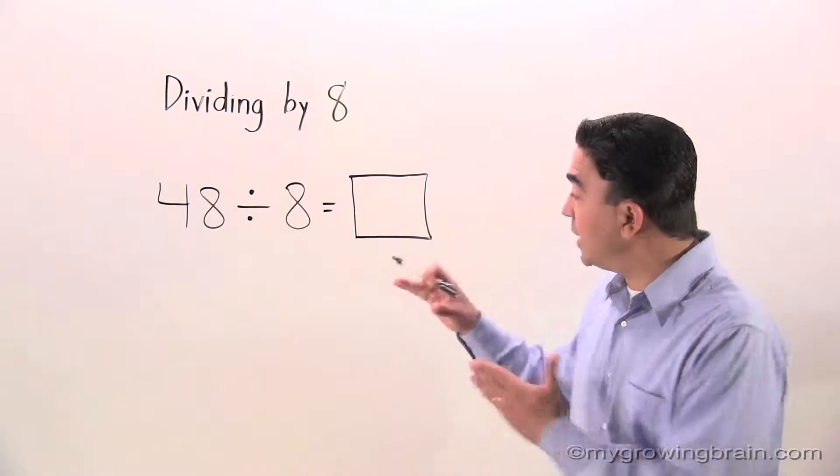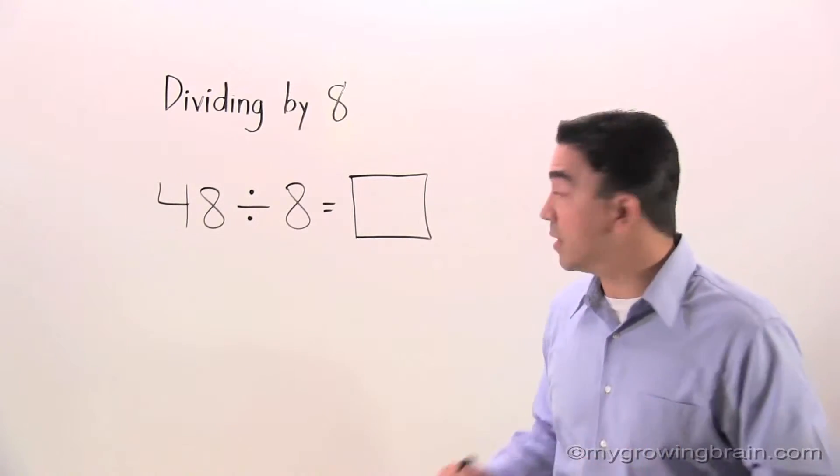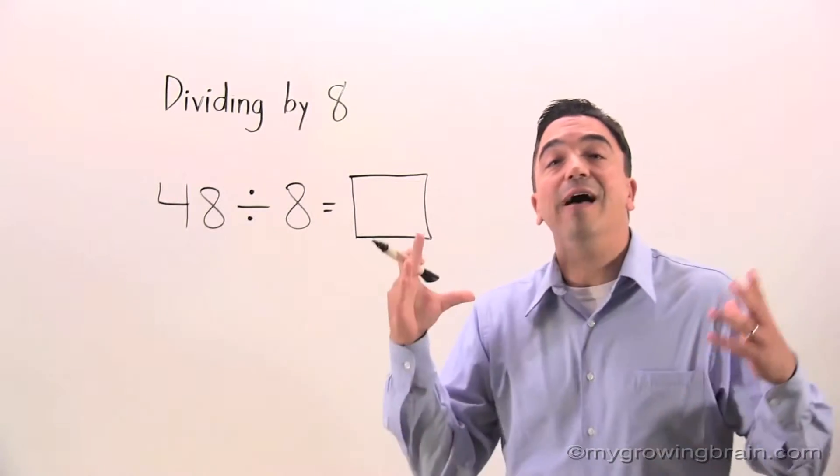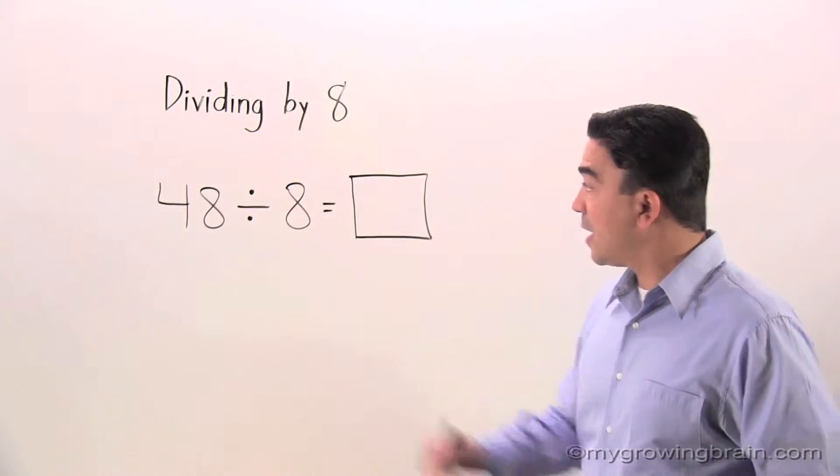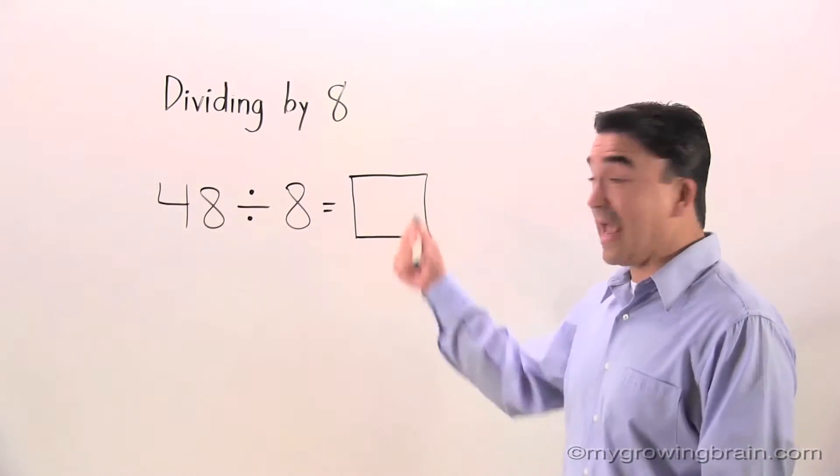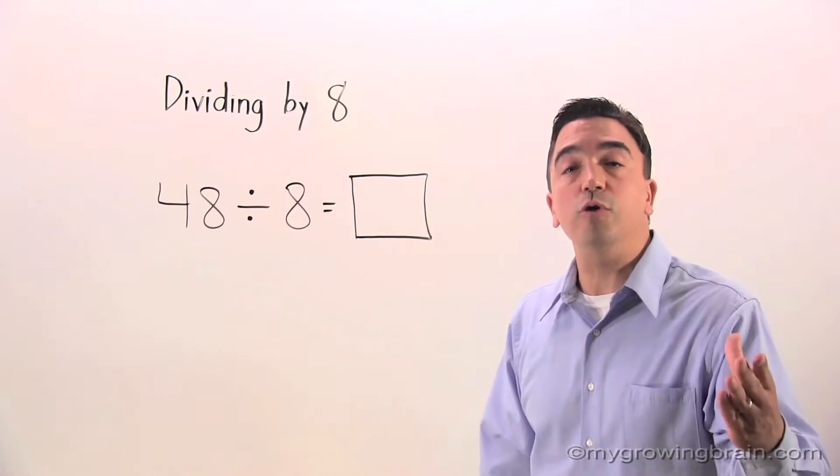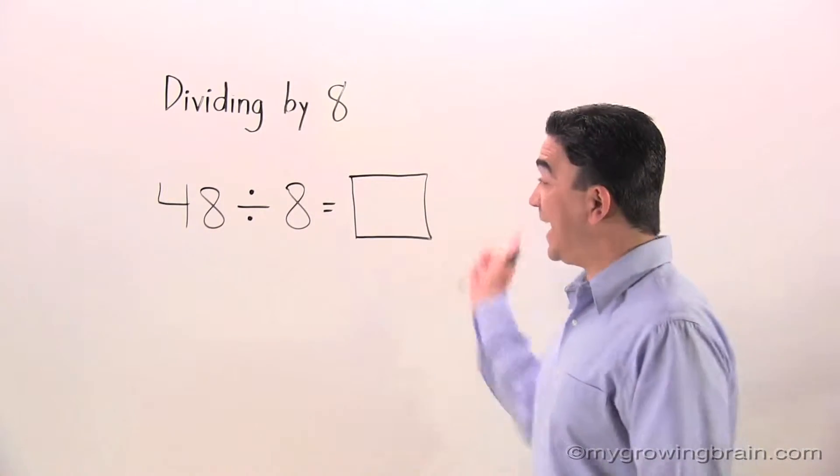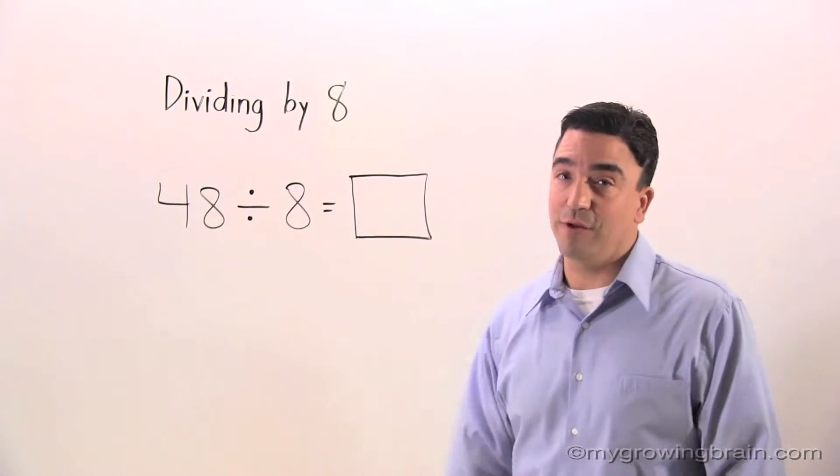Let me tell you each part of this division problem. The 48 is the dividend. The 8 is the divisor. And the blank, the box, is the quotient. The quotient is the answer to a division problem.